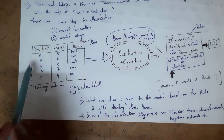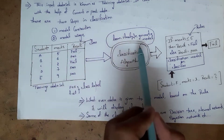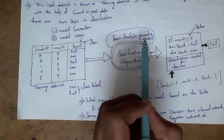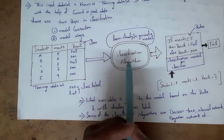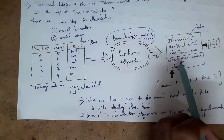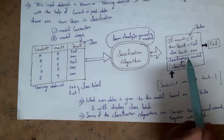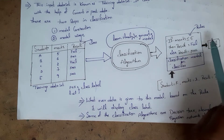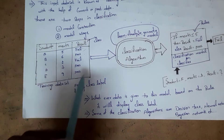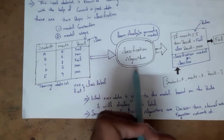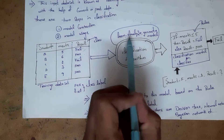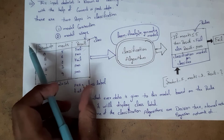Now we need to send this input data set into the classification algorithm, so that the classification algorithm will create a classification model. We also call this classification model as a classifier. This classifier contains some rules. When we send this data set into the classification algorithm, the algorithm will learn this data set first.